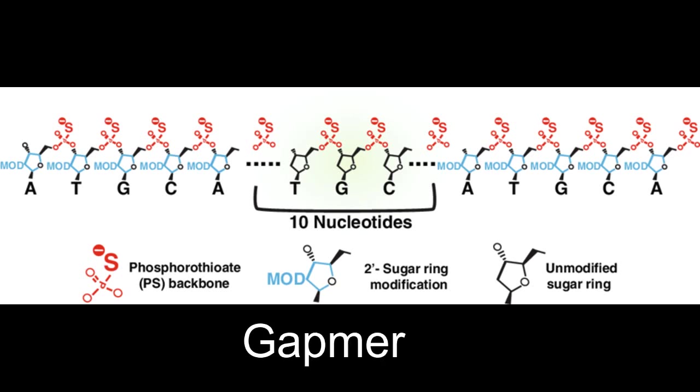Since RNase H cleavage is the most desirable mechanism for antisense effect, and since 2'-O-alkyl modifications are desirable for nuclease resistance, a hybrid oligonucleotide construct incorporating both characteristics has appeared in the form of the gapmer antisense oligonucleotide.